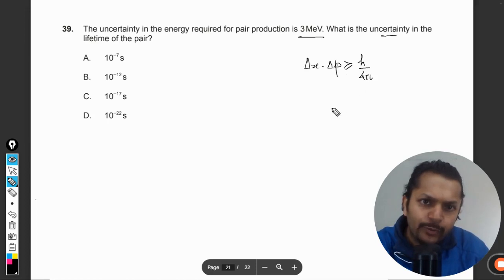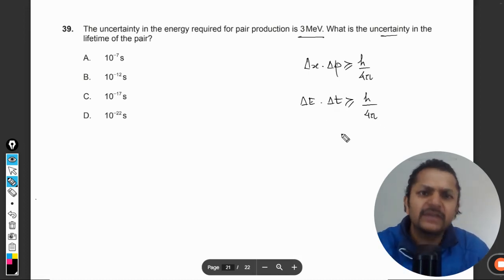Similarly, the same thing can be extended into energy and the life of that particle. So that will be given by ΔE·Δt ≥ h/4π. From this we are going to understand how to find this.